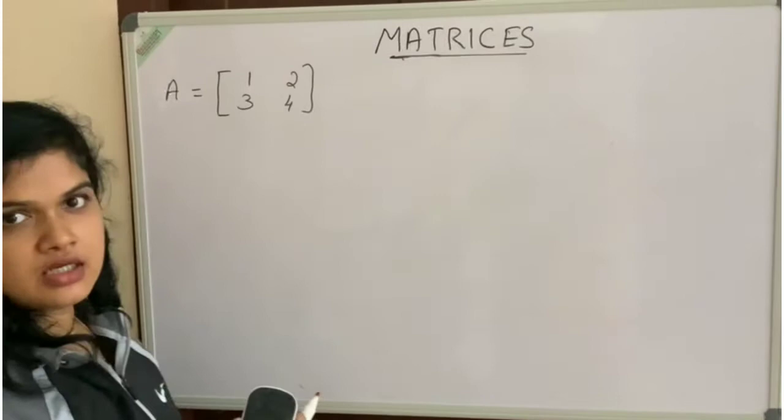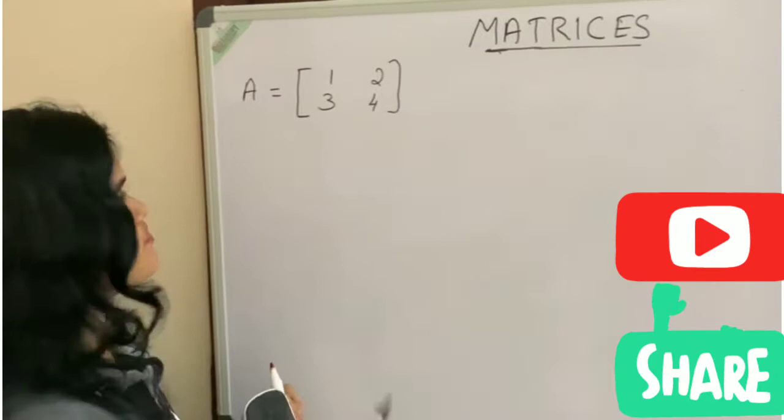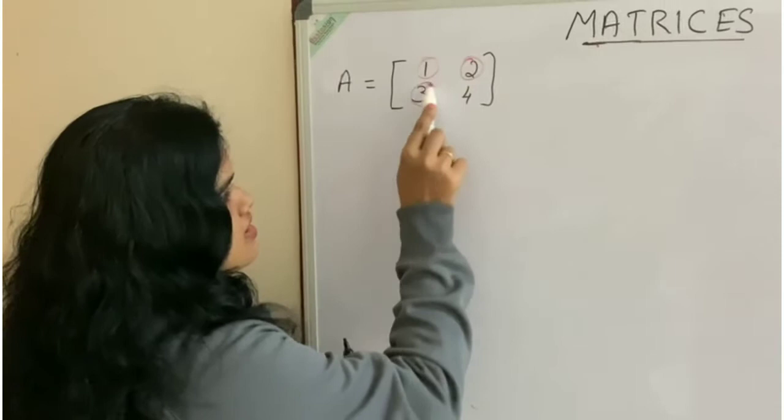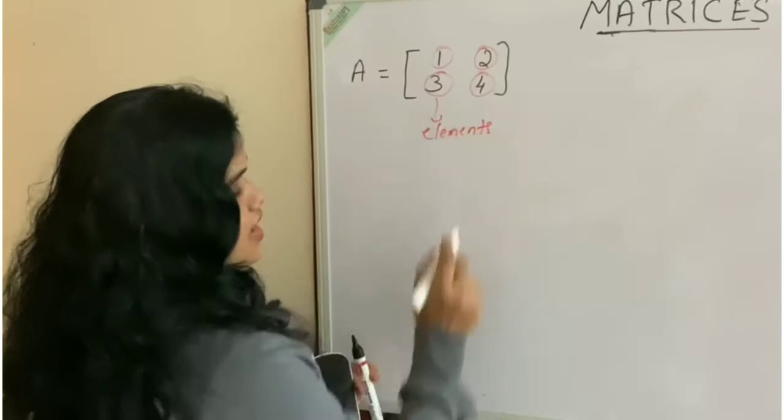Here, this matrix is represented as matrix A. Then, these numbers here are known as elements, elements of the matrix.